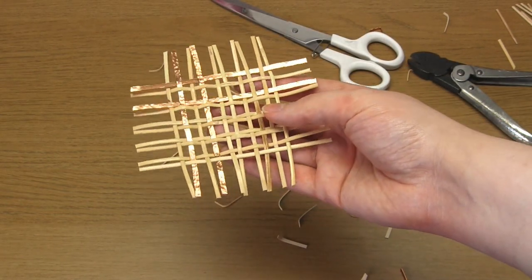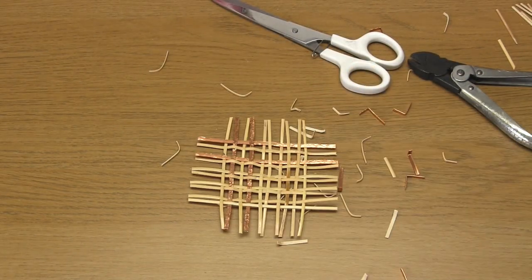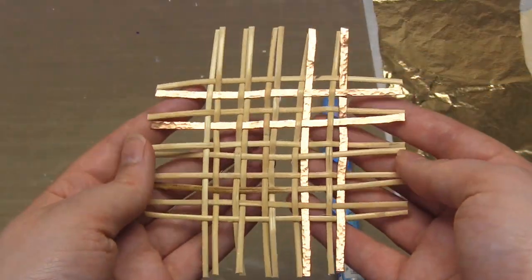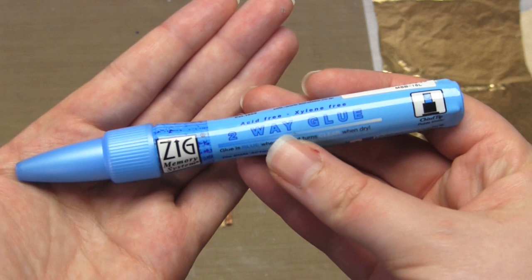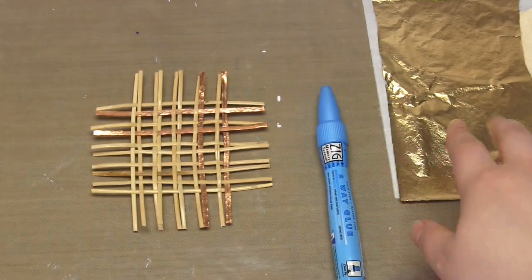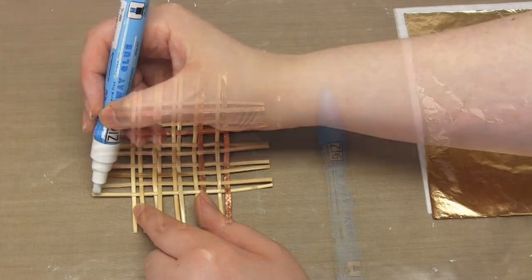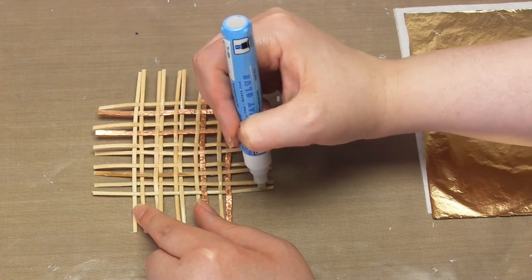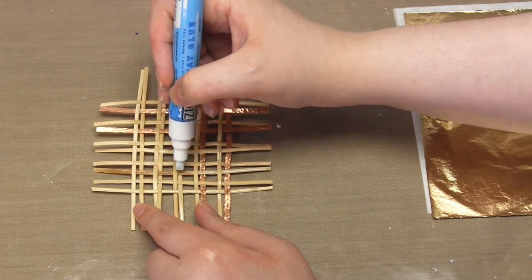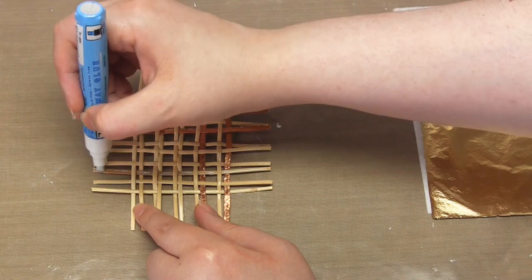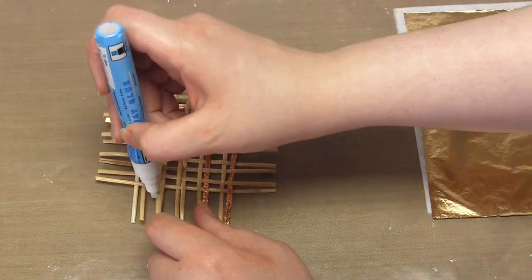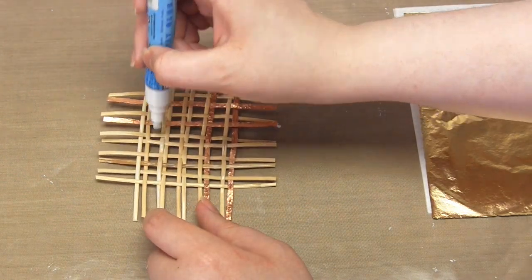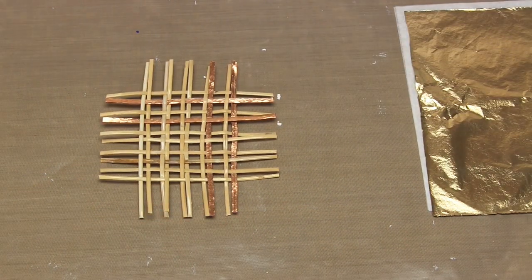For extra embellishment I then decided to add some imitation gold leaf. So I applied glue to four of the strands and then waited until it dried tacky. I used the Zig two-way glue pen because the glue in it dries to a tacky finish and that's what you need. If you use a glue that's too wet then you'll just end up getting into a mess. So you either need this kind of pen or a different type of glue that's specifically designed for use with leaf or foil.